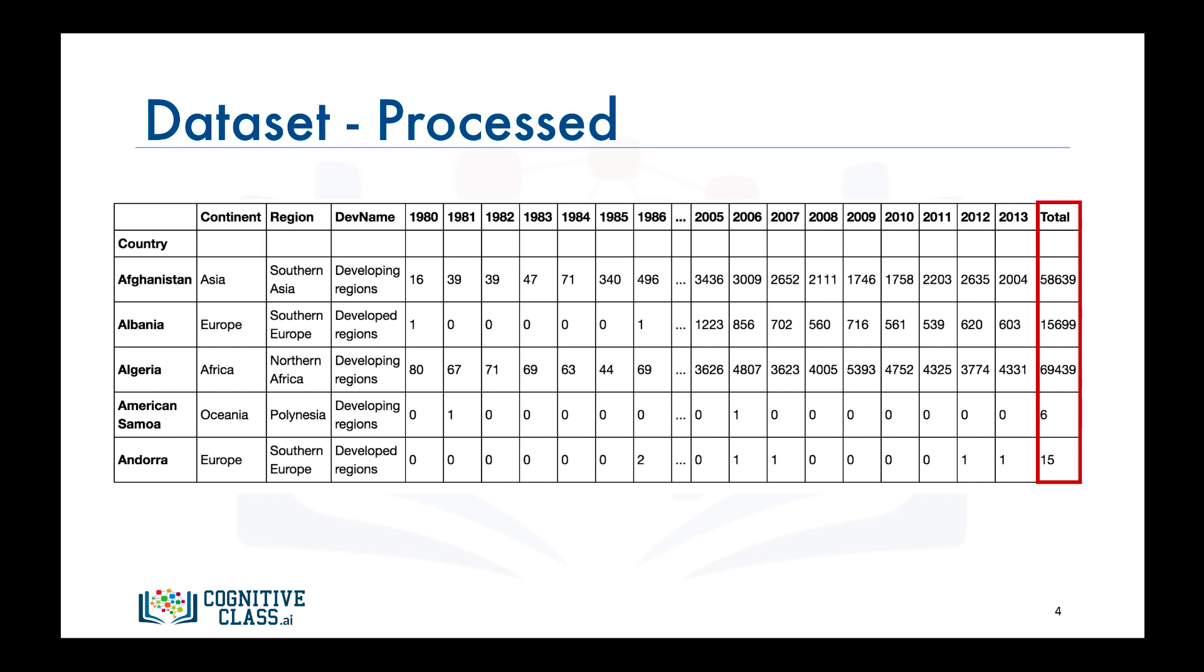Also, let's add an extra column which represents the cumulative sum of annual immigration from each country from 1980 to 2013. So for Afghanistan, for example, it is 58,639 total. And for Albania, it is 15,699 and so on. And let's name our data frame DF_Canada.